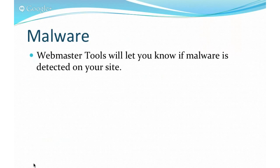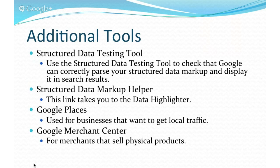There are also some additional tools. The structured data markup helper is essentially the same thing as the Data Highlighter, and we'll be looking at both of those later. Google Places is for local businesses and Google Merchant Center is for retail merchants that sell physical products — these two tools are not relevant for affiliate marketers.